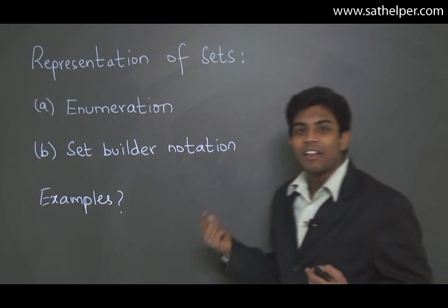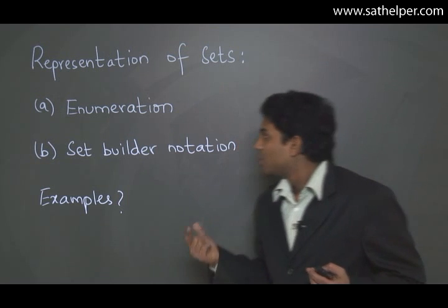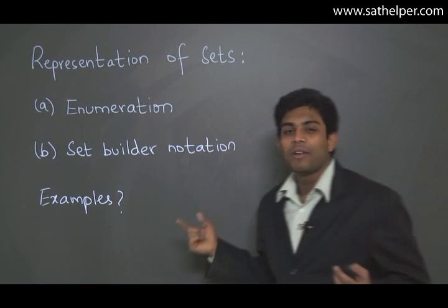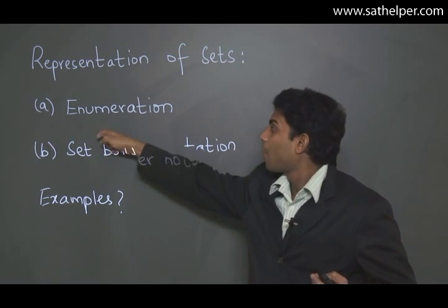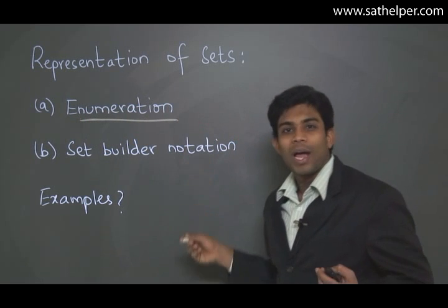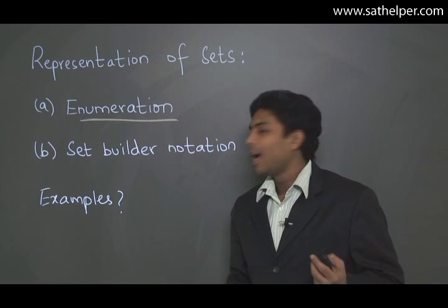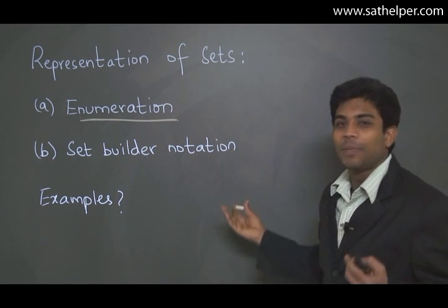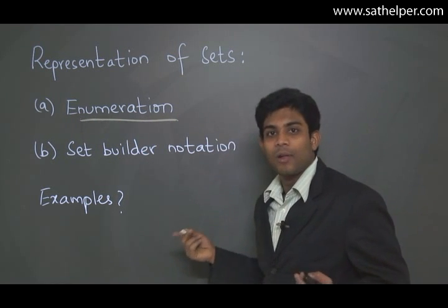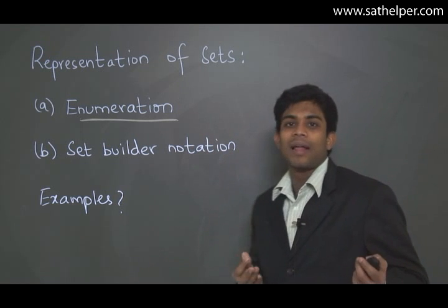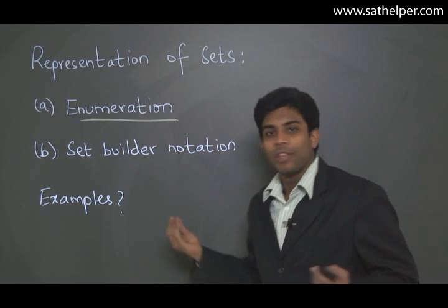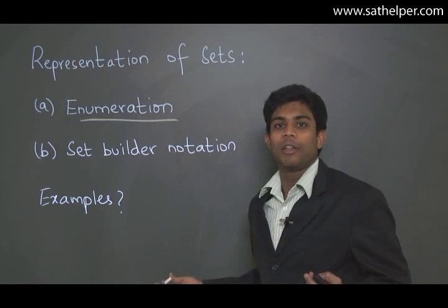Now, how can sets be represented? One way is through enumeration, where you define the set by enumerating all its elements. This is mostly feasible if your set is finite. If your set has, say, 10 elements, then you can enumerate all the elements.